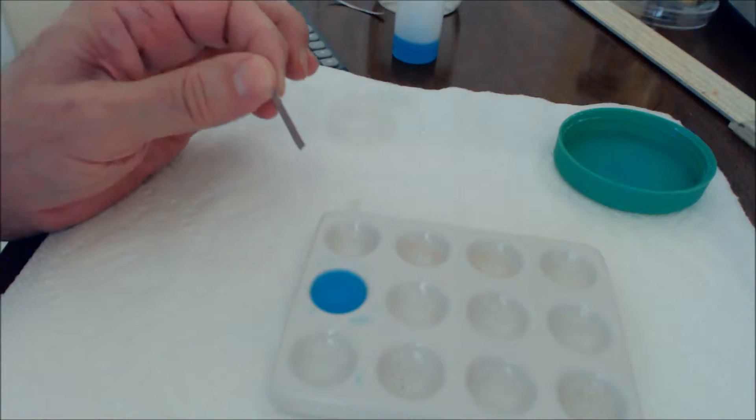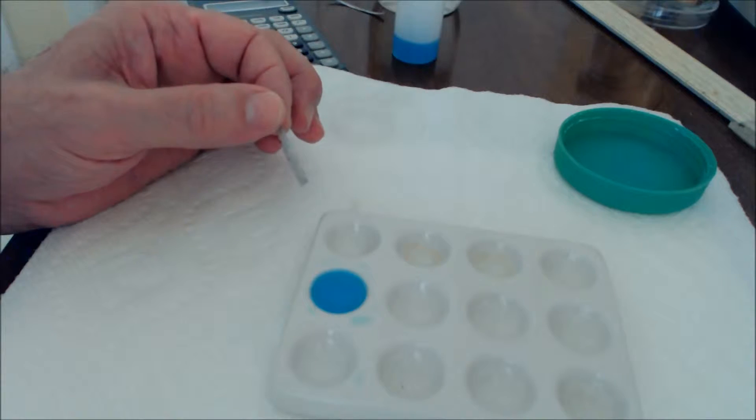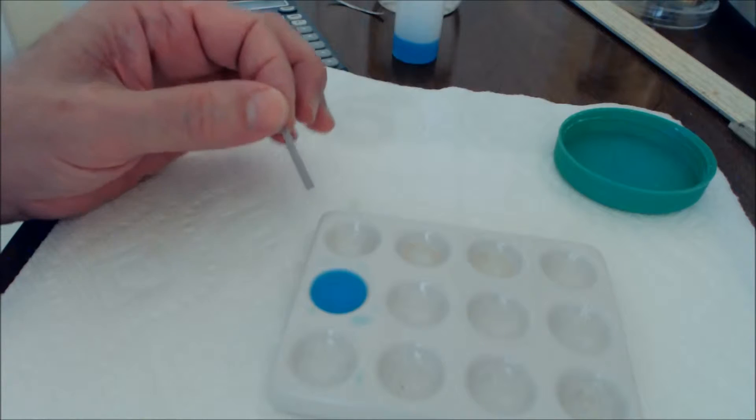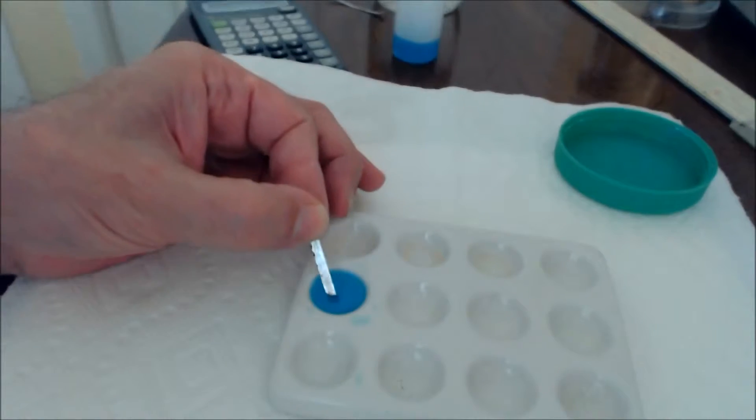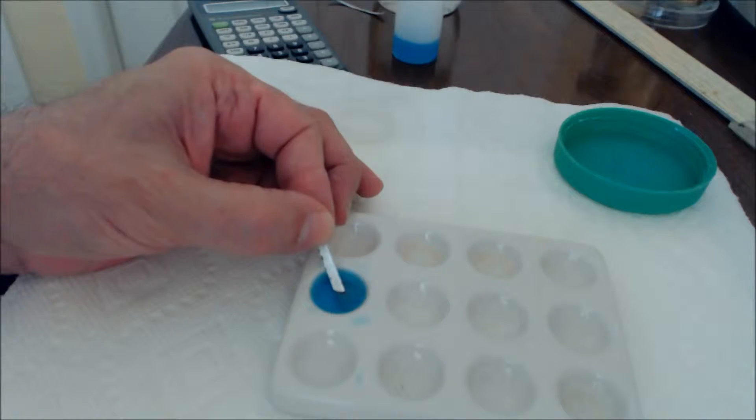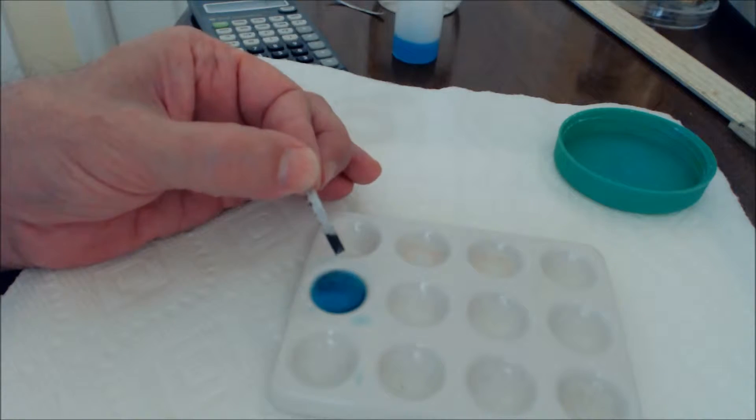The copper is in the plus two oxidation state, copper ions. And I want to just show you that this is a very spontaneous reaction. The copper gets reduced. The magnesium gets oxidized. You can see it's very shiny. And when I put it in here, it becomes dark.